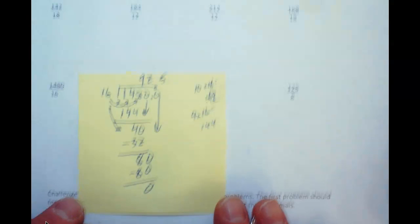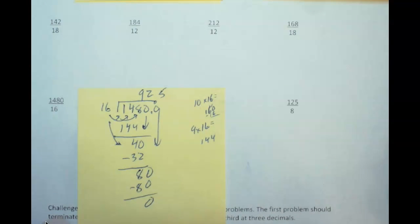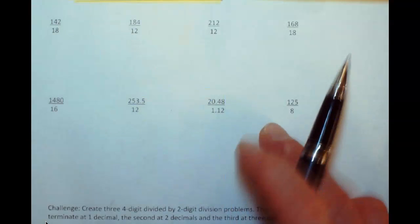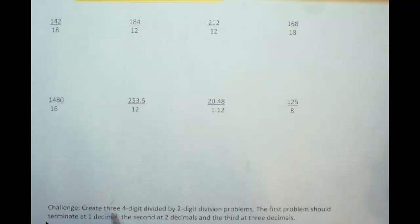There's my work steps in. And at the very bottom it says that your challenge problems, you can create a 3 problem: four digits divided by two digits. First problem terminates at one decimal, second one at two decimals, and third one at three decimals. It's kind of tough, see if you can do it. Alright, thanks for listening.